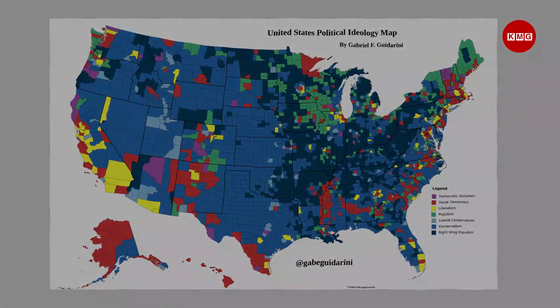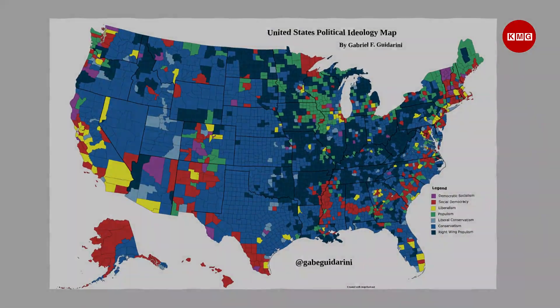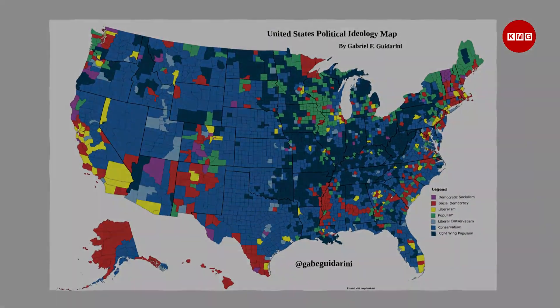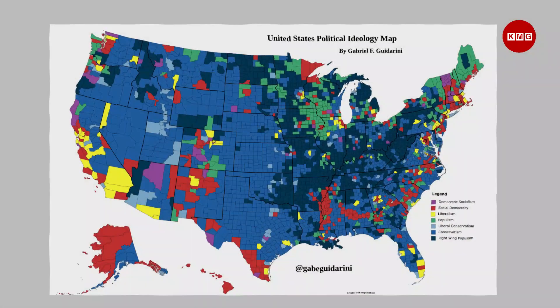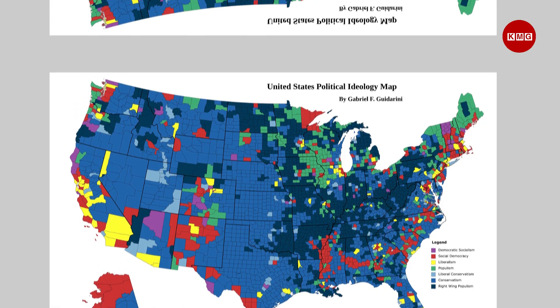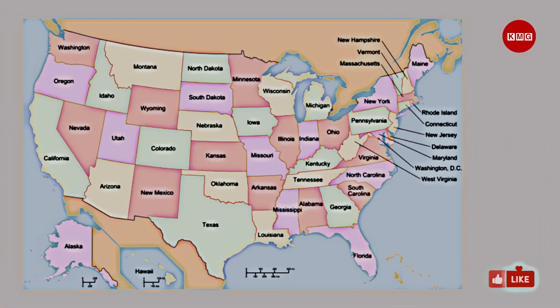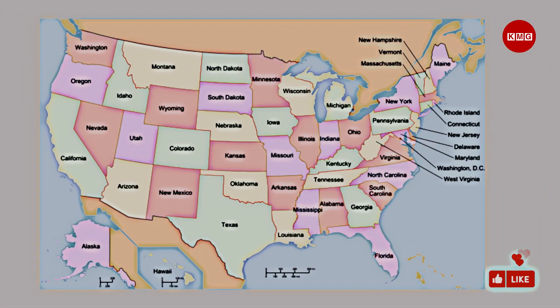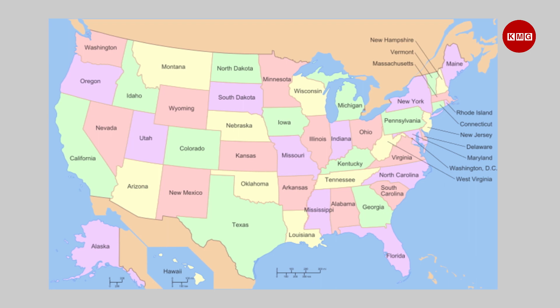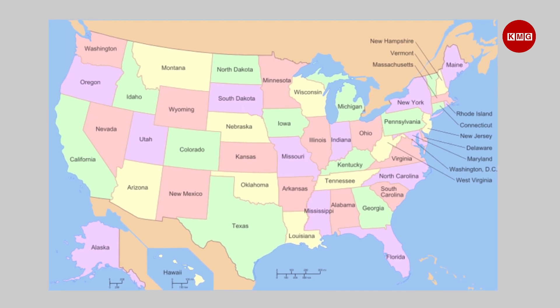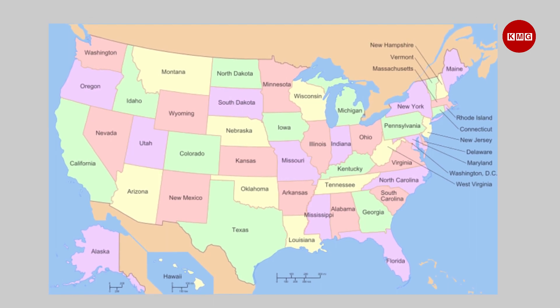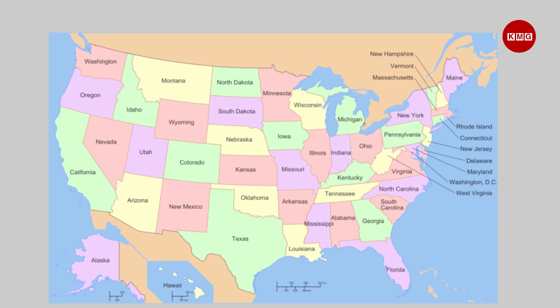that ranks the states by their political ideology based on a comprehensive analysis of various indicators and data sources. I'm also going to explain what makes each state more conservative or liberal, and how that affects their policies and politics.